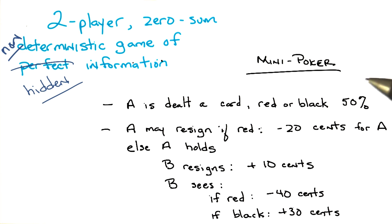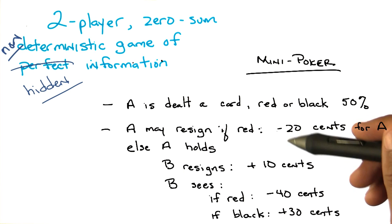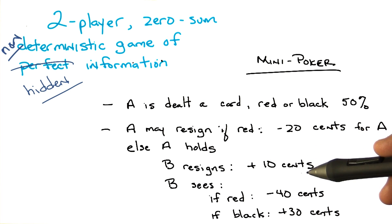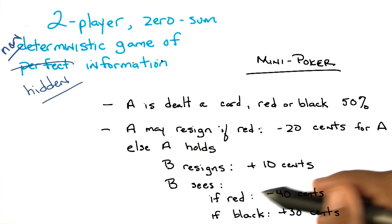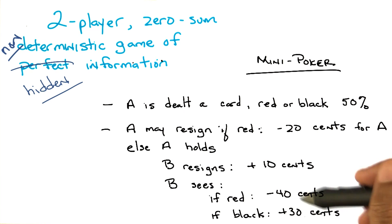And then if B believes that the card is bad, and calls A, or just folds then, then A wins that. But if B says, no, I think maybe you're bluffing, and calls him, then everybody's rewards are more extreme, I guess.